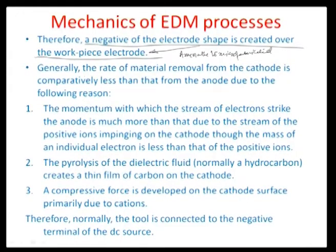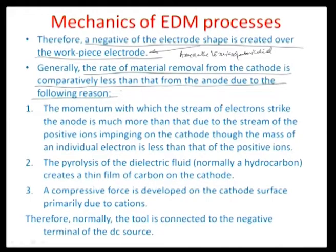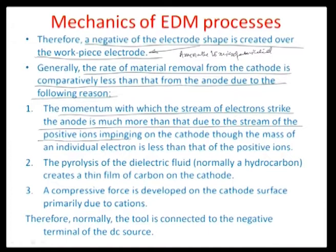The rate of material removal from the cathode is comparatively lesser than from the anode. One of the main reasons the material removal rate is higher at the anode is that the momentum with which the stream of electrons strikes the anode is much greater than that due to the stream of positive ions impinging on the cathode, even though the mass of an individual electron is less than that of a positive ion.